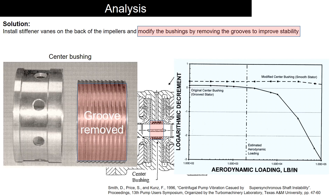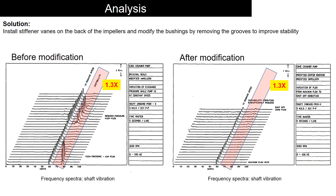This resulted in higher log dec, i.e. damping. These modifications eliminated the 1.3x vibration and reduced overall 1x vibration.